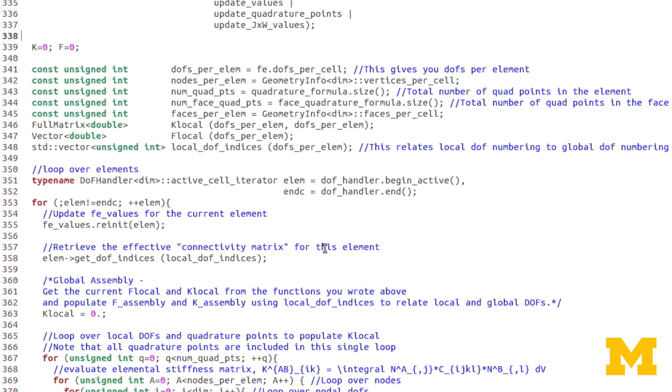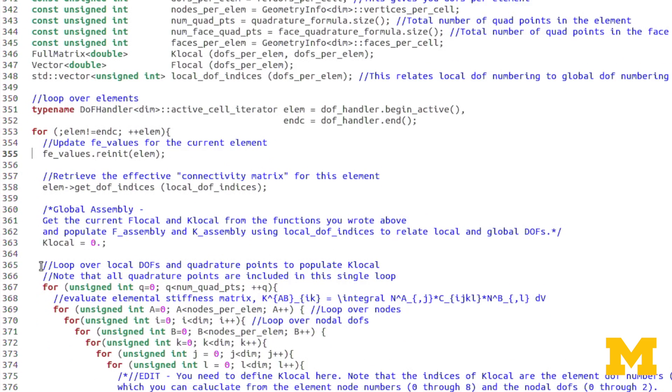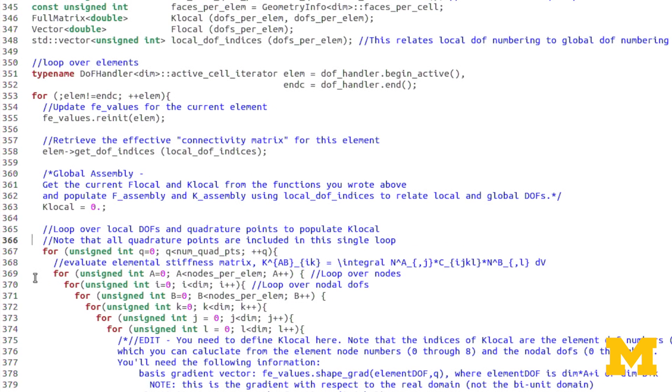So let's scroll down into our element loop. Now you can see here the first thing is that we do fevalues.reinit elem. So fevalues is reinitializing for this particular element. So it's getting all the correct values for the quadrature, for the Jacobians, and so on. The first step that we're going to look at is defining Klocal. Now before we look any further at the code, let's look at the board at what that general form is.